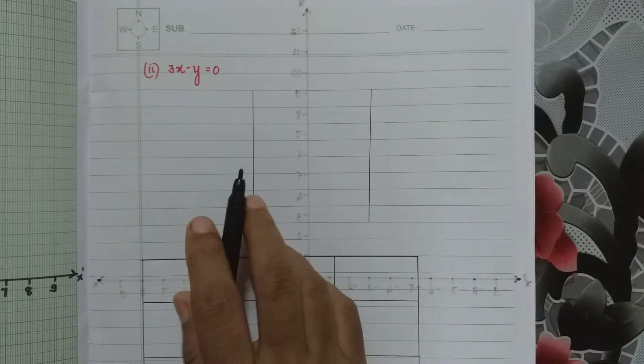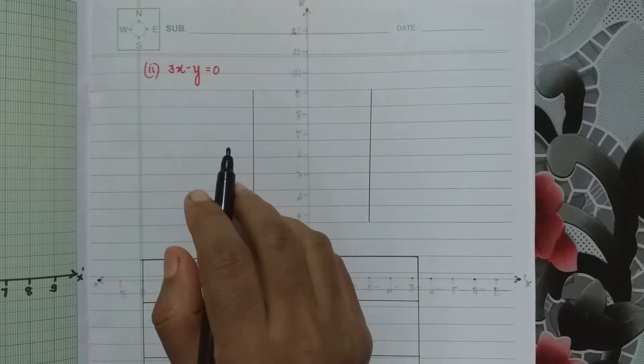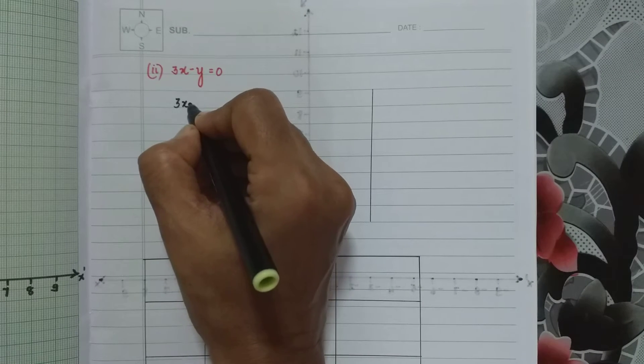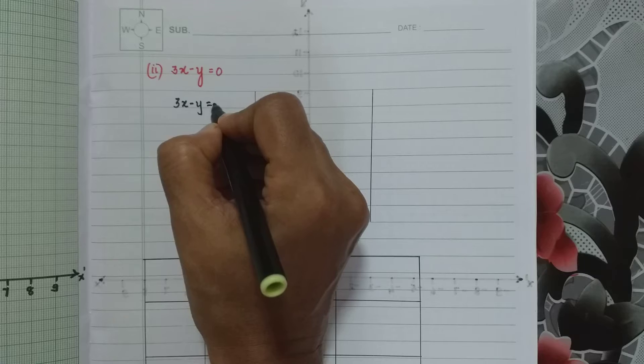The second sub-question: 3x minus y equals 0. Let us write the equation first. We have here 3x minus y equals 0.